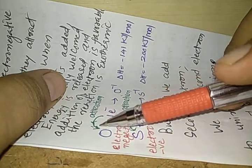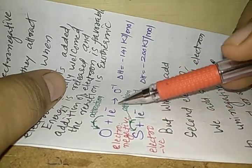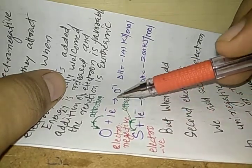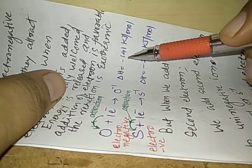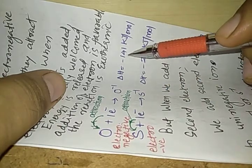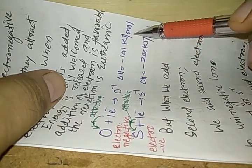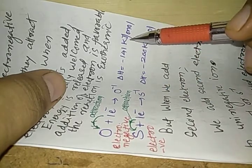This is an electronegative element which attracts the electron. As the electron is attracted, O turns into O minus 1. The energy is released and 141 kilojoule per mole energy is released.